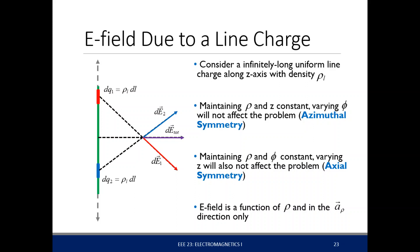Now let's look at the electric field due to a line charge. Consider an infinitely long line charge. If we consider the symmetry of the line charge, the electric field due to one infinitesimal charge and due to another infinitesimal charge oppose each other in some directions. If you take the sum of these differential electric fields, you get a total electric field that is only in the direction of A-rho. This is because of the symmetry of the line charge — it's only in the direction of A-rho.